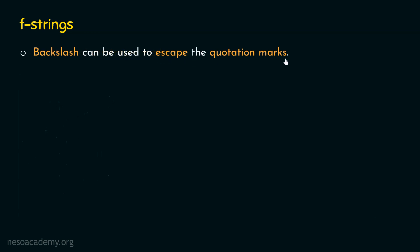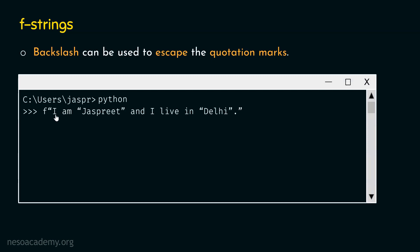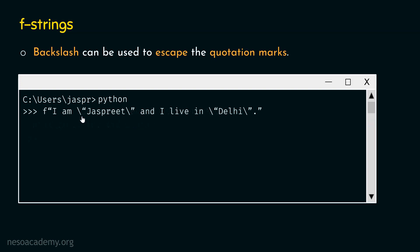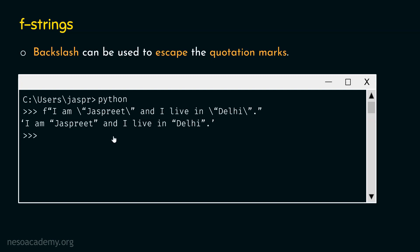A backslash can be used to escape quotation marks. For example, if we type f within double quotes: I am just Preet and I live in Delhi — using double quotes inside will cause a syntax error. To escape those double quotes, we add a backslash in front of them. If we hit enter, we will get: I am "just Preet" and I live in "Delhi". So with backslash, the quotes are preserved in the output.